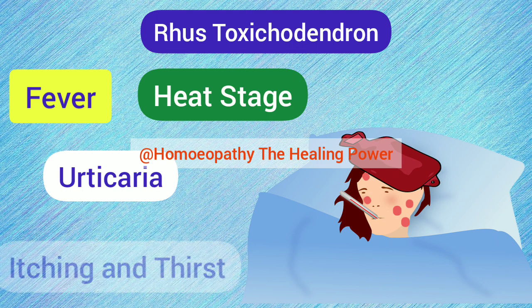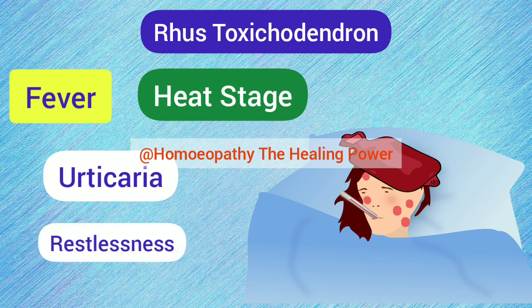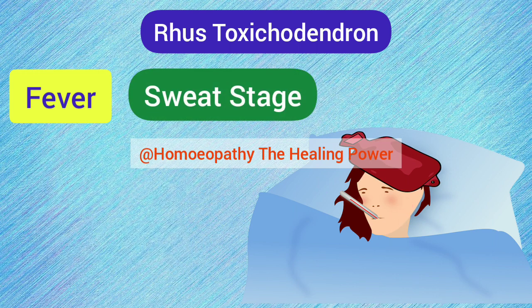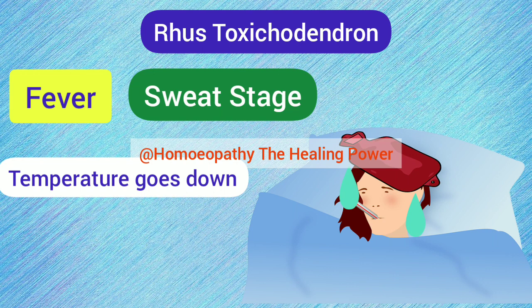In the heat stage, the teasing cough passes off and urticaria breaks out all over the body with violent itching and great thirst. The patient is very restless, continuously changing position but finding no rest. After this stage, there is profuse odorless perspiration, the fever goes down, and the urticaria also passes off after perspiration.